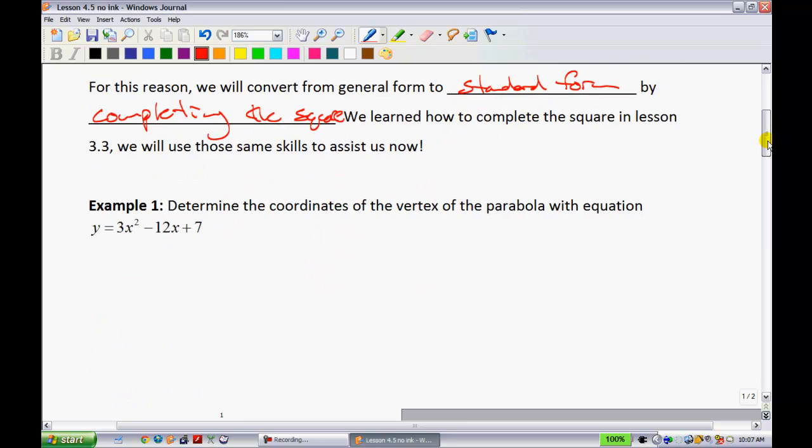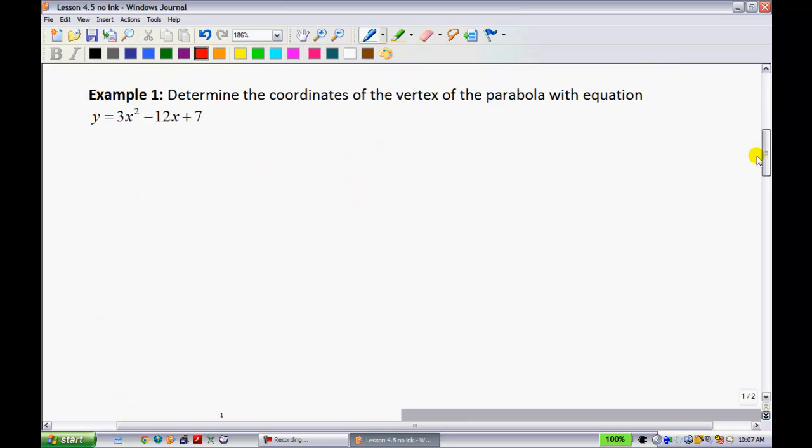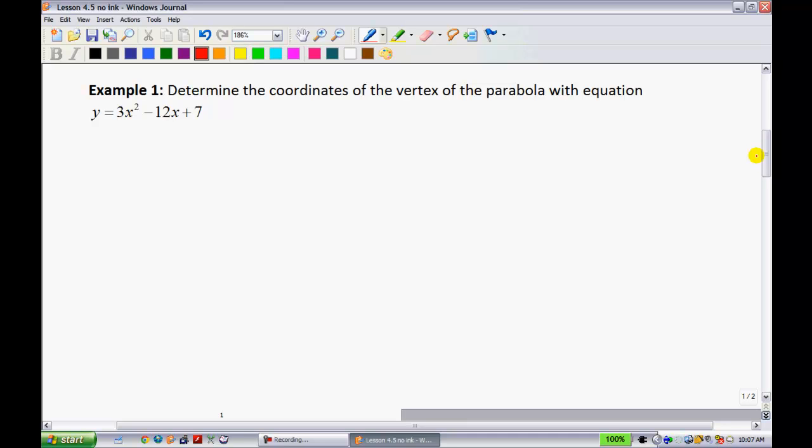So if I mosey down to my first example right here. This is example one. Determine the coordinates of the vertex of the parabola with equation y equals 3x squared minus 12x plus 7. Now, when we complete the square, hopefully you recall, that what we always want to start out with first is trying to factor out the leading coefficient in front of the x squared. So, if it's a negative, you're going to factor that out. For this time, we just have a 3.